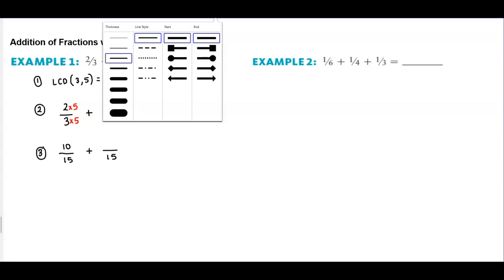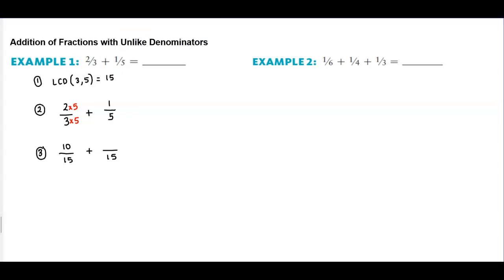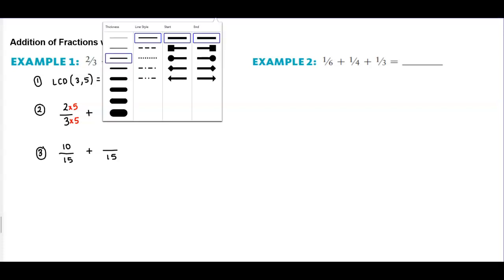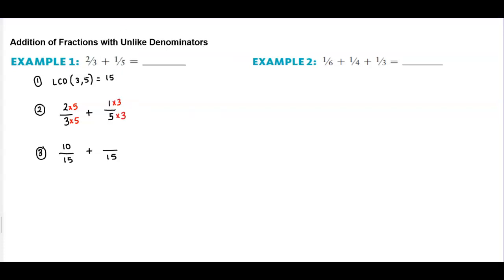Now we need to take fifteen and divide that by five. Well that's three. So that tells us that five times three is going to equal fifteen. We're going to do the same thing to the numerator, so one times three is going to give us three. Now we have a common denominator of fifteen, and we're going to add ten plus three which gives us thirteen.